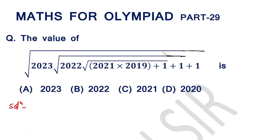Namaskar! This is the 29th video of the series Maths for Olympiad. Today's question is: find the value of √2023 × √2022 × √(2021 × 2019 + 1) + 1 + 1. The answer options are 2023, 2022, 2021, and 2020. Let's start.